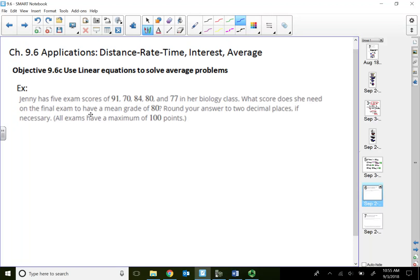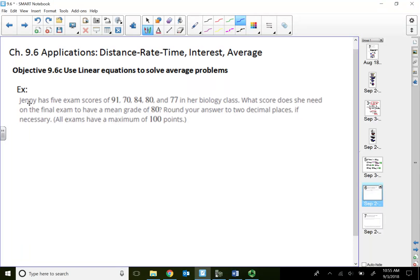So this particular example regarding average problems says Jenny has five exam scores: 91, 70, 84, 80, and 77 in her biology class. What score does she need to earn on the final exam to have a mean grade of 80? So remember, this 80 is referring to after the final exam. So we're going to assume the maximum points is 100 points and all the exam scores weigh the same.